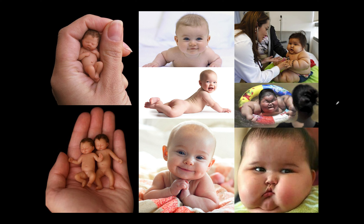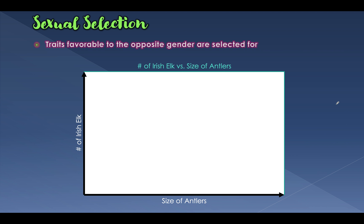The next type is sexual selection. Those three we talked about — directional, disruptive, and stabilizing — are the most common in nature. Sexual selection can actually overlap with any of the other three; it really just depends on the situation.